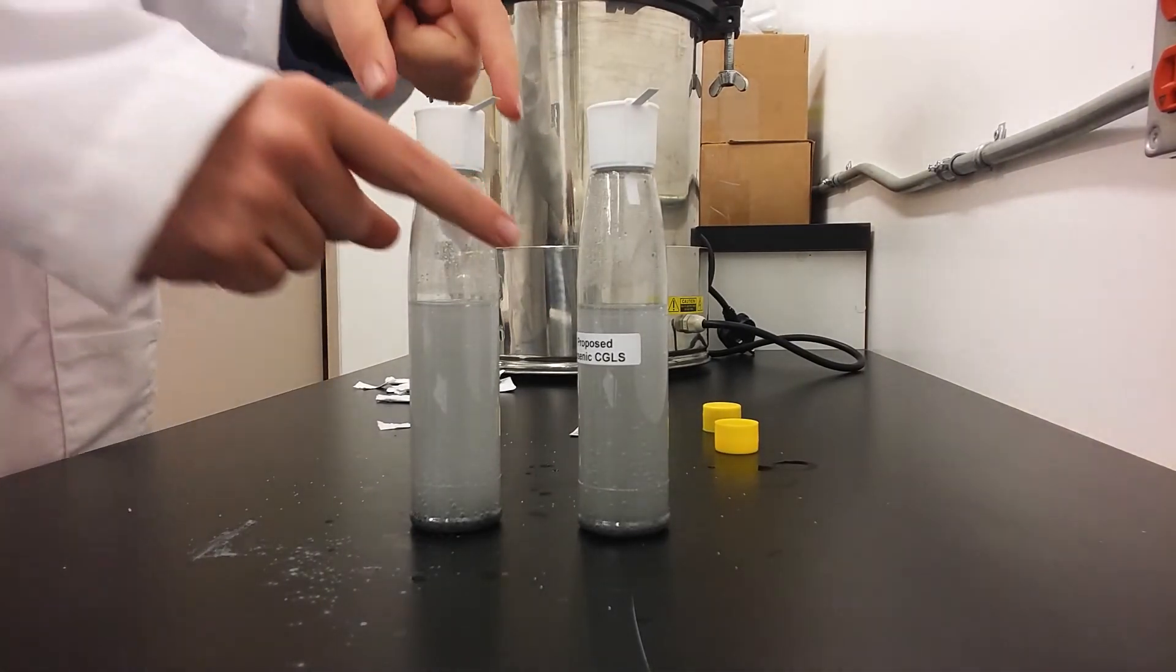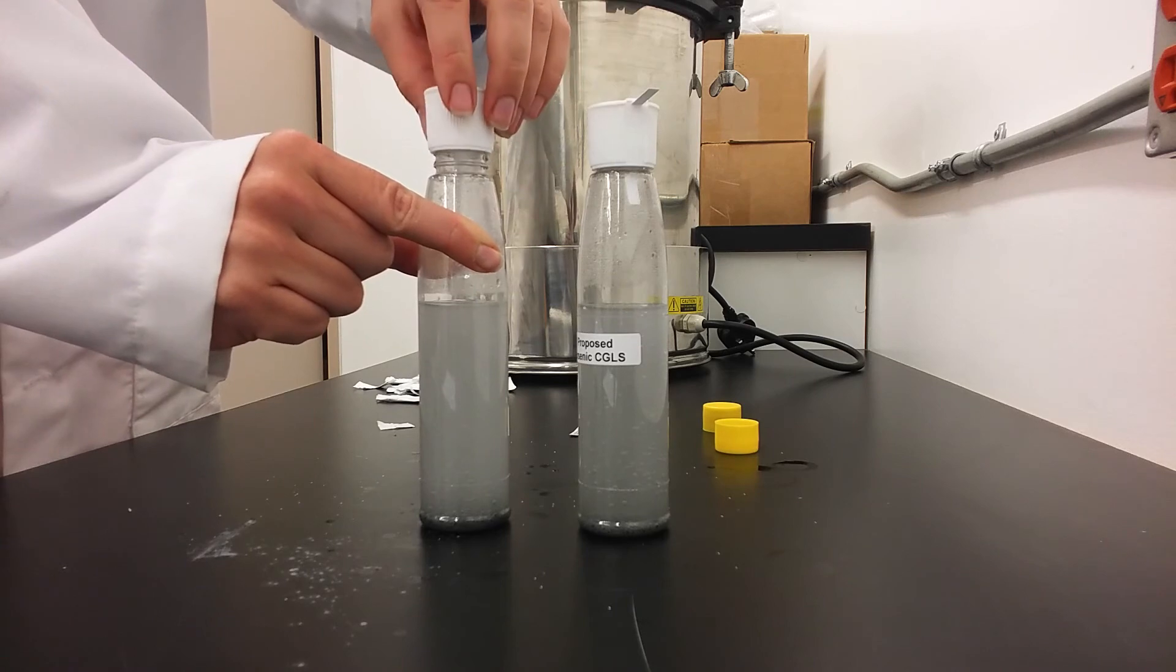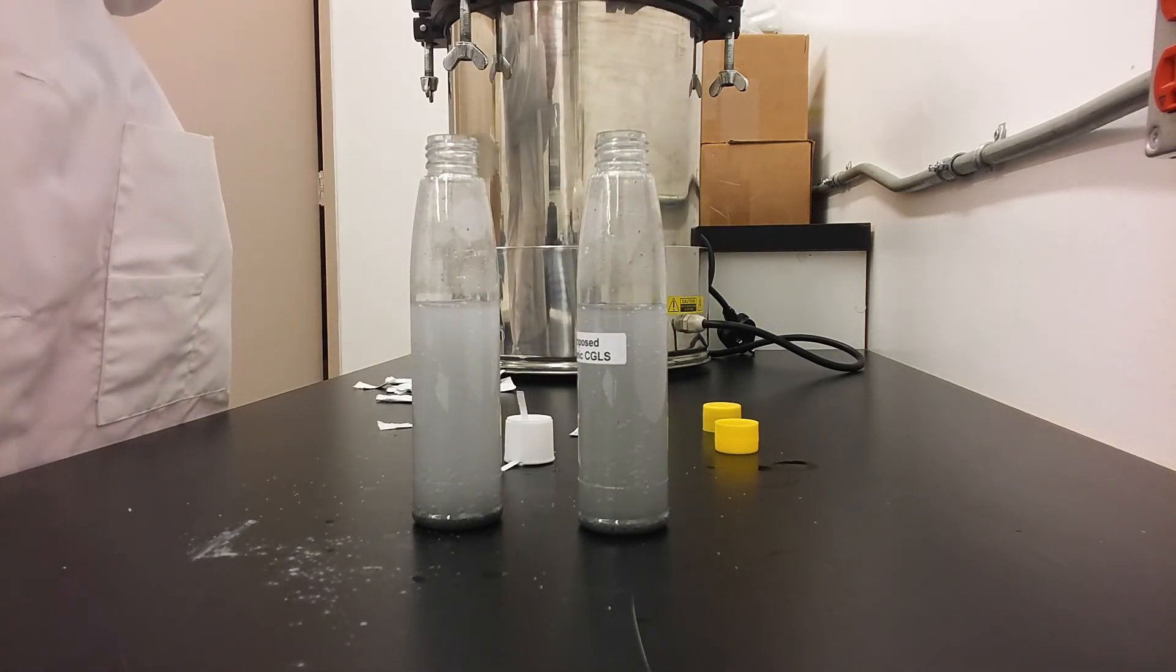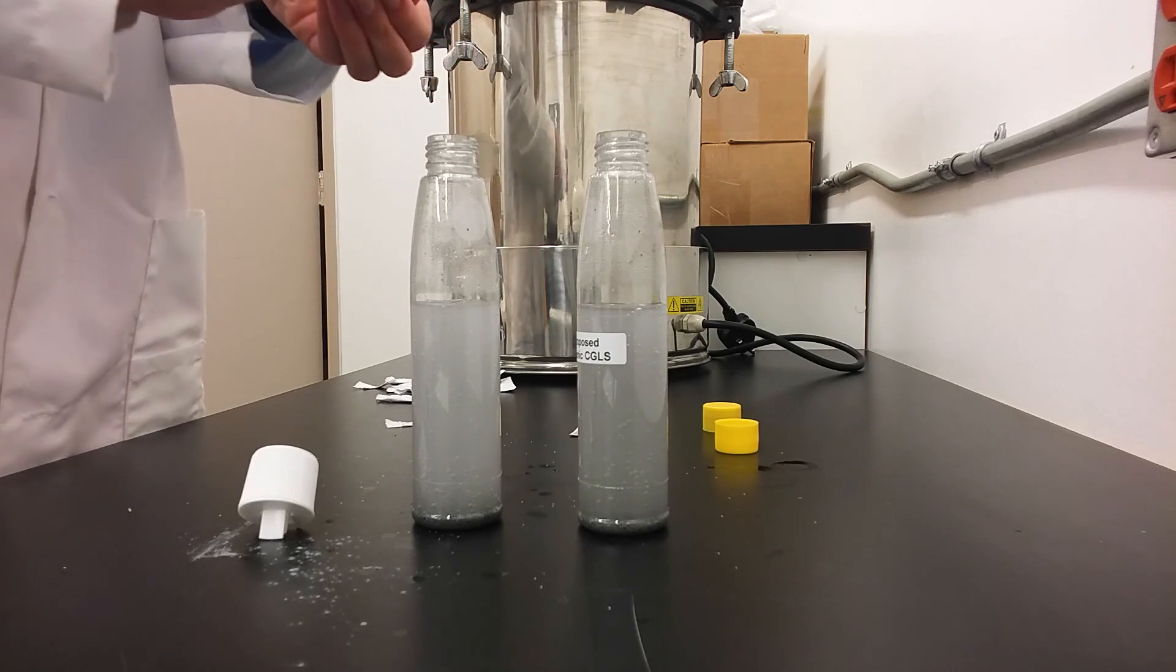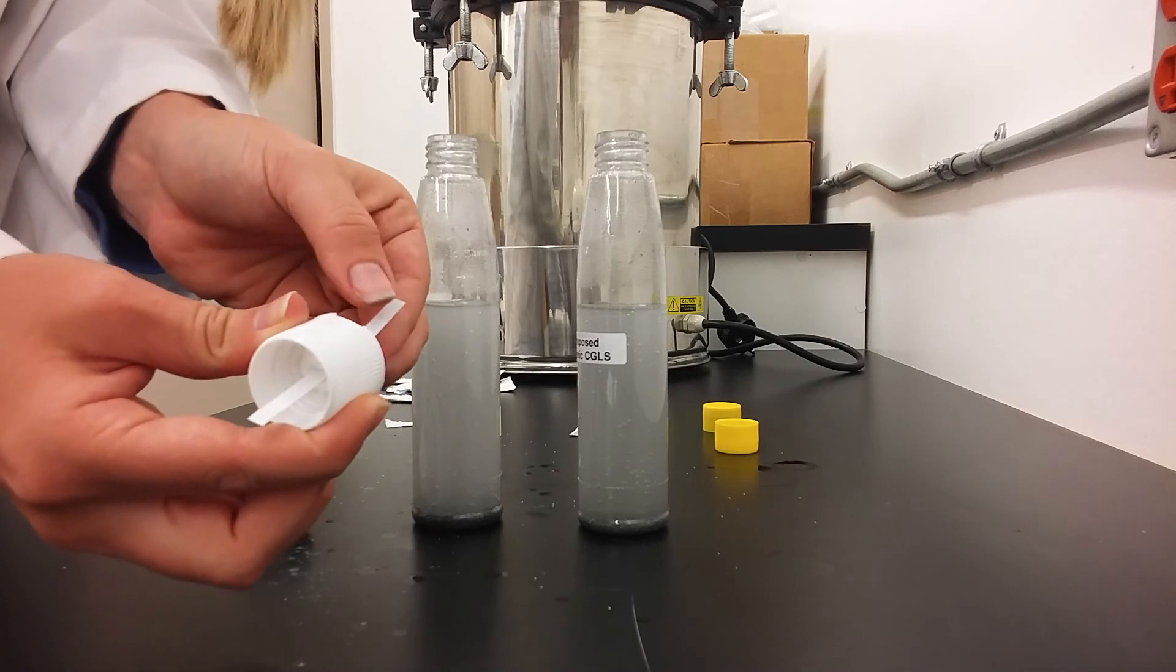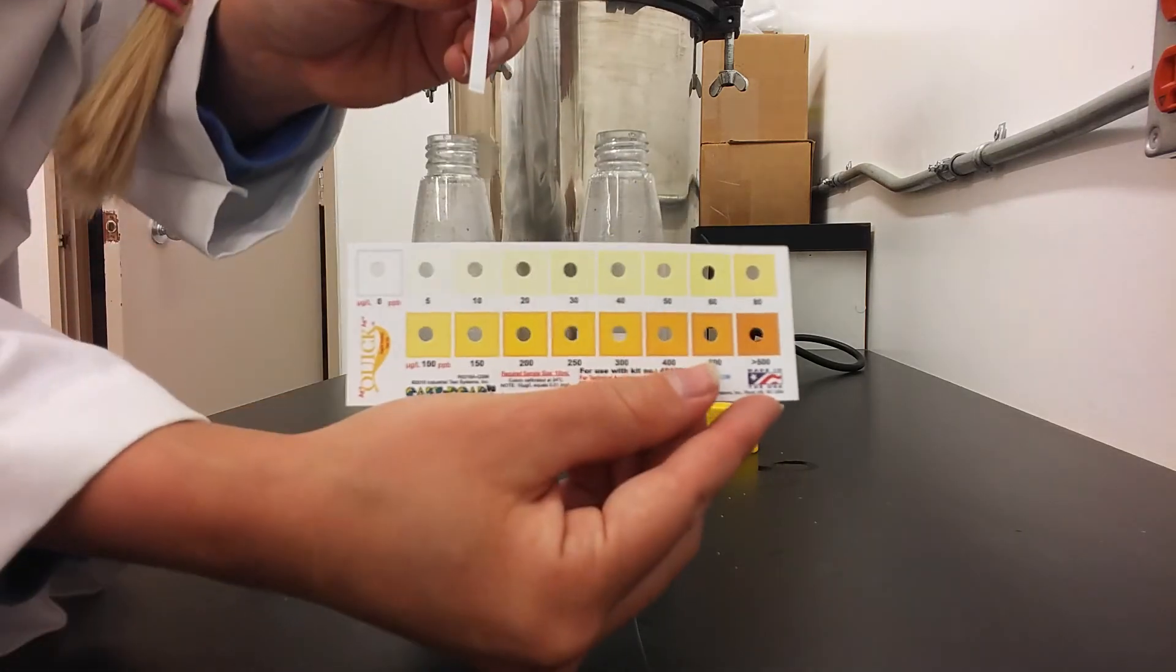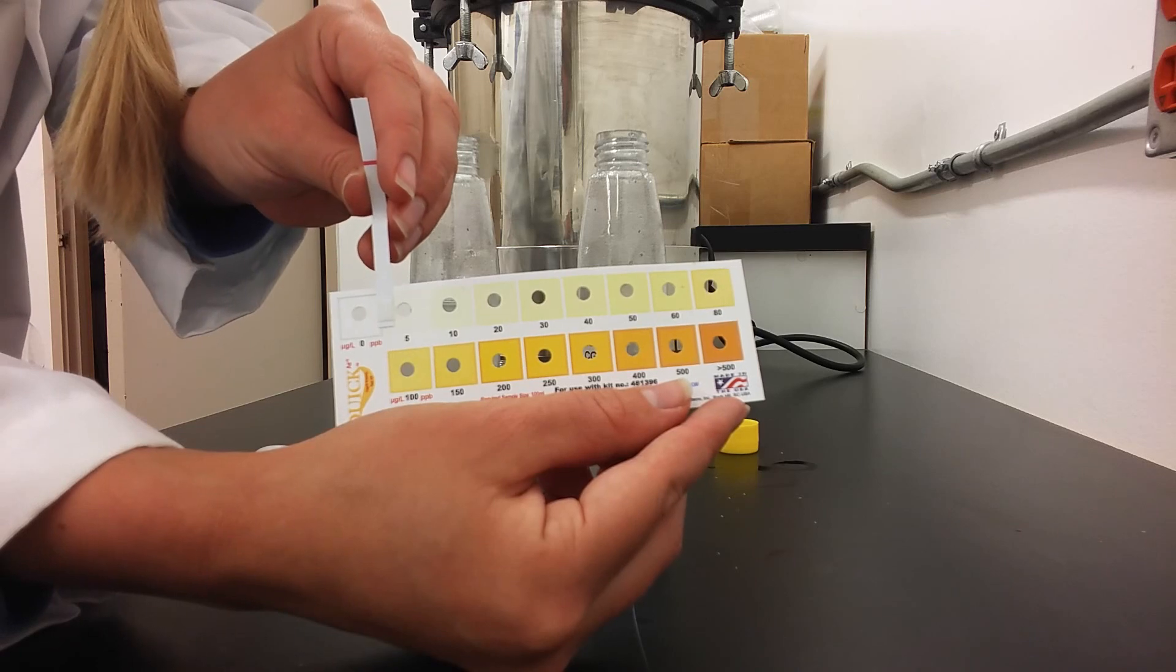Now that the arsenic bottles have sat for 10 minutes, you will carefully remove the cap and slowly remove the test strip from the white cap, being careful not to smudge the indicator cotton test pad. You will take that test strip and compare it to the color chart. It should be near zero or five to be within the Canadian standard guidelines.